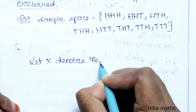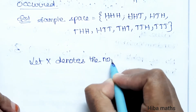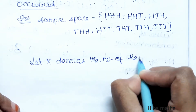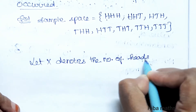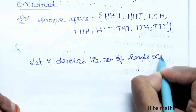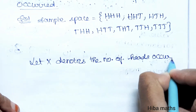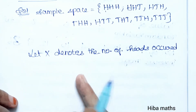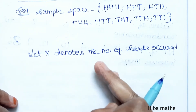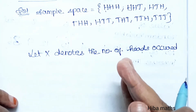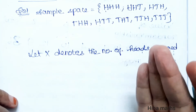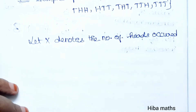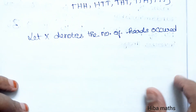Let X denote the number of heads occurred. So how many heads can come? X can be 0 heads, 1 head, 2 heads, or 3 heads — so we have 4 possible outcomes to consider.